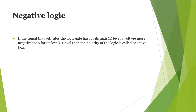The next one is negative logic. If the signal that activates the logic gate has for its high one level a voltage more negative than for its low zero level, then the polarity of the logic is called negative logic. For example, taking one signal over one period of time — here this is low and the signal is high. Basically, as per the conventional value, this one is low, but we are considering it as high, and this one is high, but we are considering it as low.